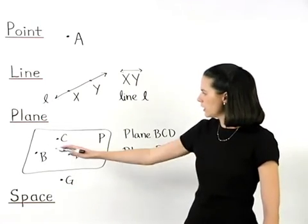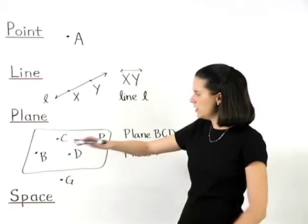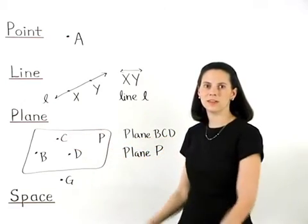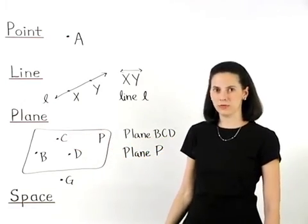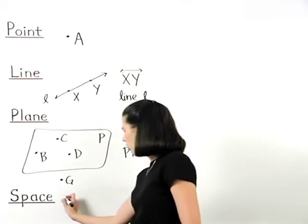In other words, plane BCD is here and point G is underneath. Space can be defined as the set of all points.